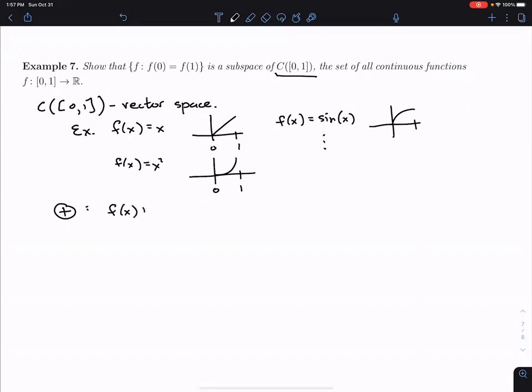Multiplication of scalars is the typical scalar multiplication. So addition in this vector space is just F(x) plus G(x), the normal addition. Because if I add two continuous functions, I still get a continuous function.